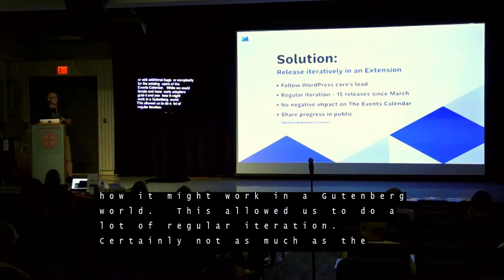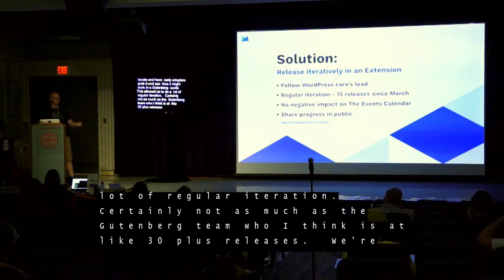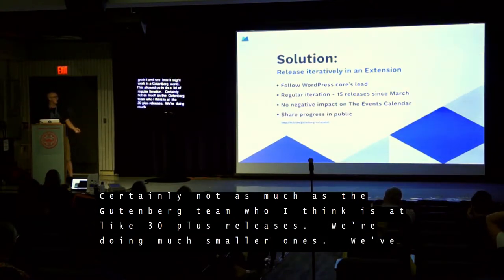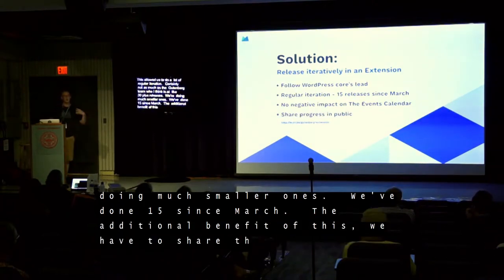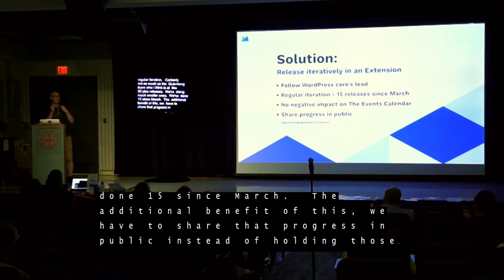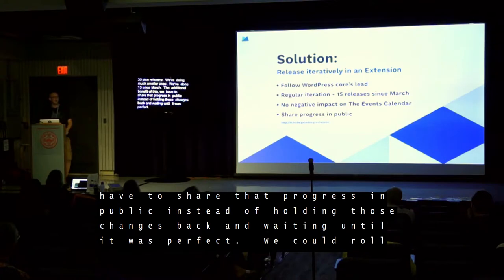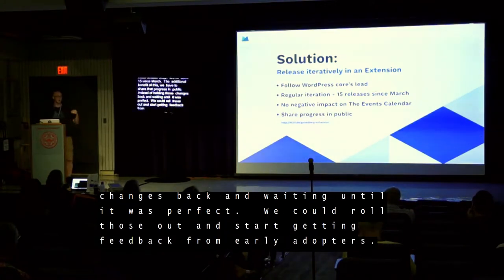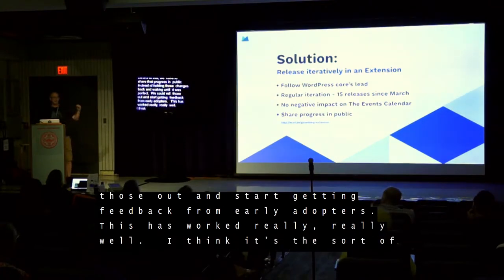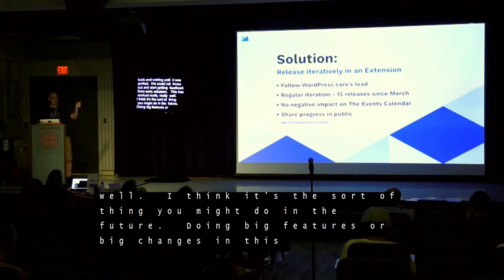This allowed us to do a lot of regular iteration. Certainly not as much as the Gutenberg team, who I think is at 30-plus releases. We're doing much smaller ones — we've done 15 since March. The additional benefit of this is we have to share that progress in public. Instead of holding those changes back and waiting until it was perfect, we could roll those out and start getting feedback from early adopters. This has worked really well. Doing big features or big changes in this kind of standalone silo is actually really freeing.